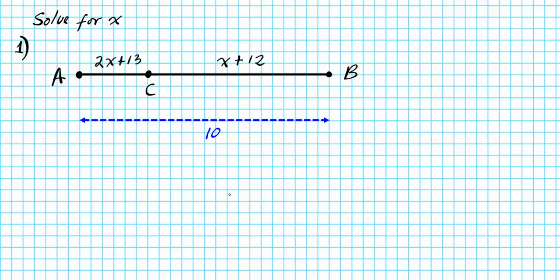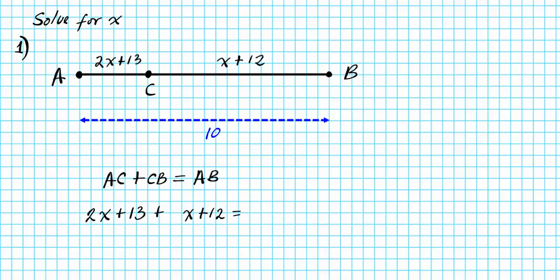Using the segment addition postulate, we can write down the statement: AC plus CB is equal to AB. Now we're going to make three substitutions. AC is 2x plus 13, CB is x plus 12, and AB represents the length of the entire segment, which is 10 units long. We write down the segment addition postulate as it applies to this given scenario, then carry out the substitution.